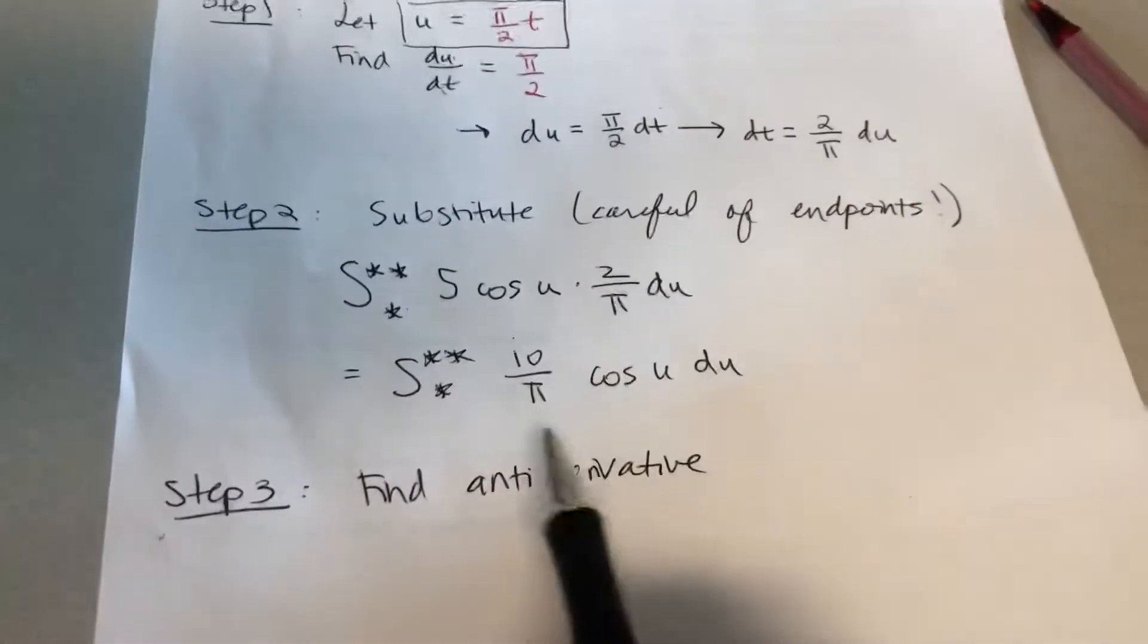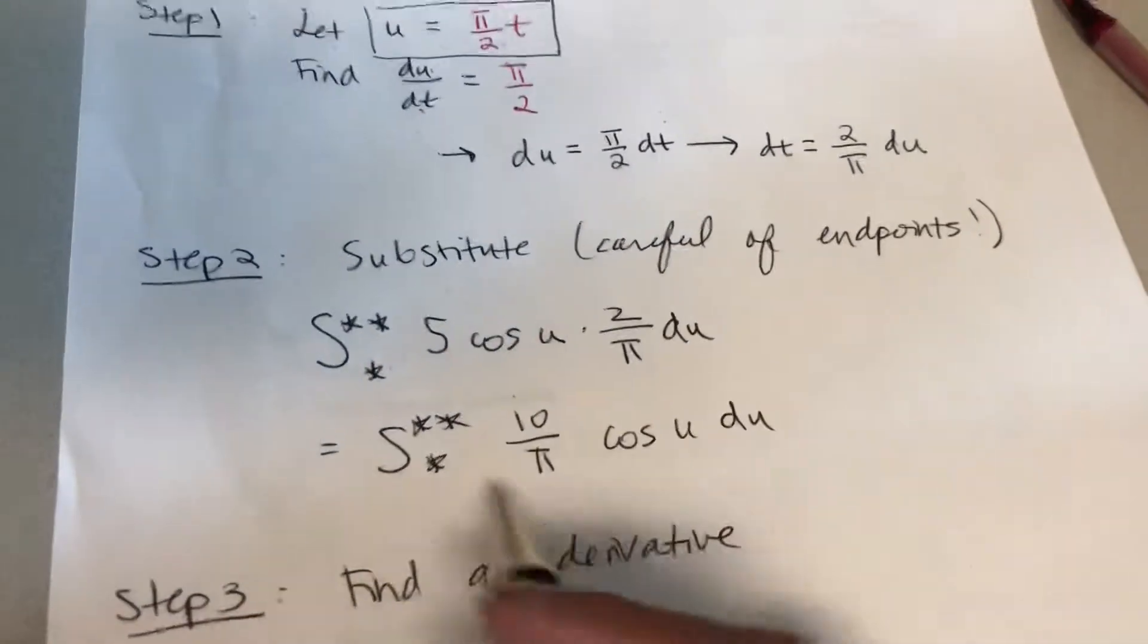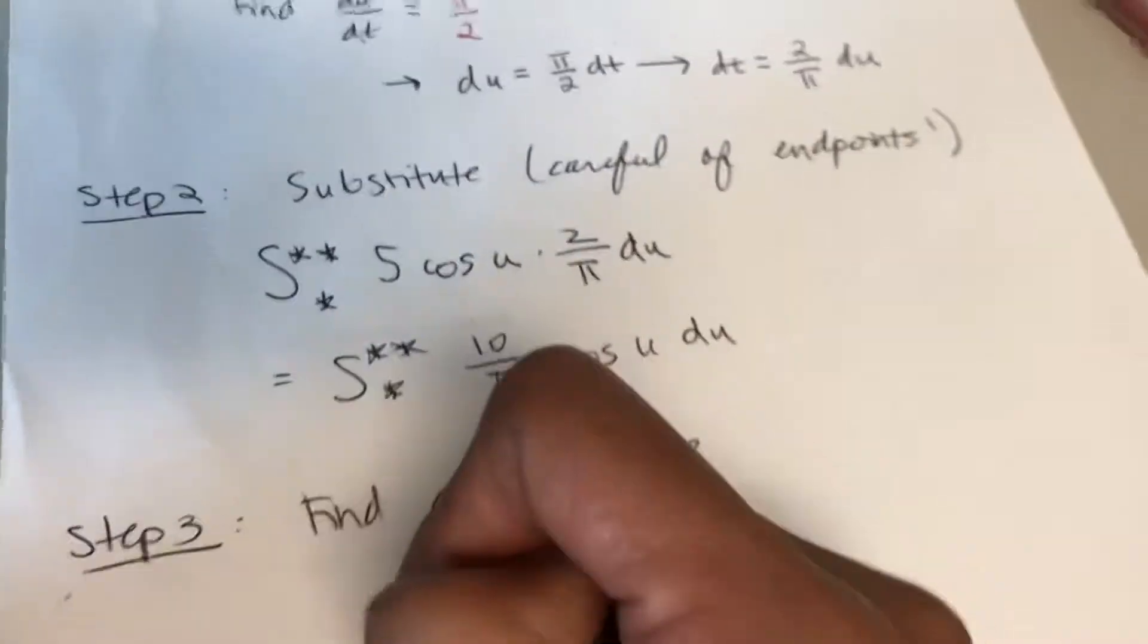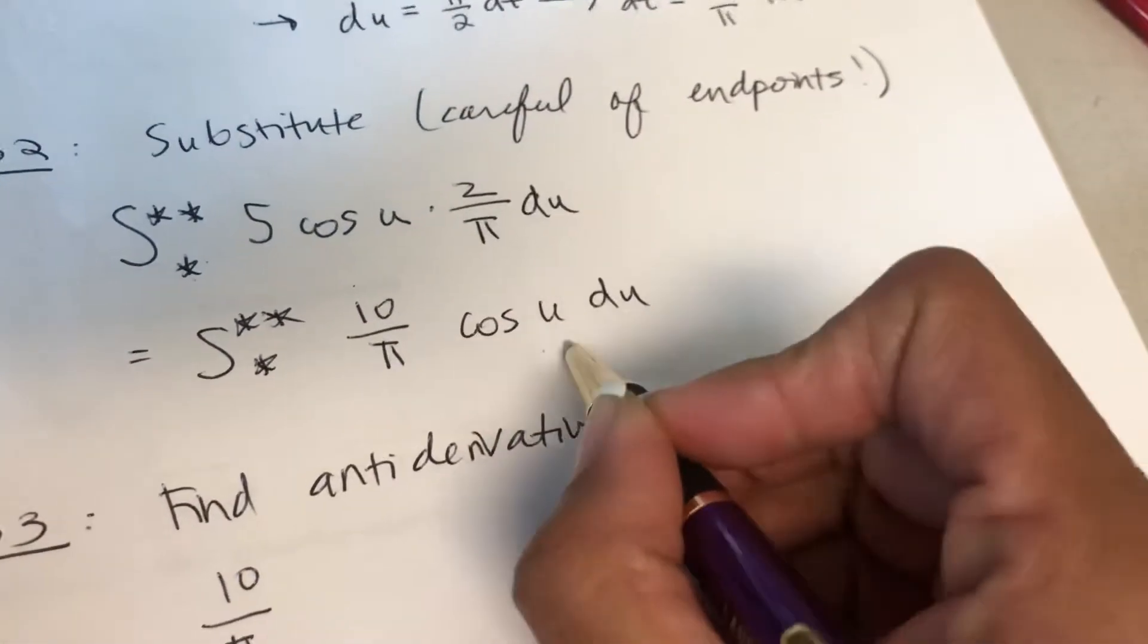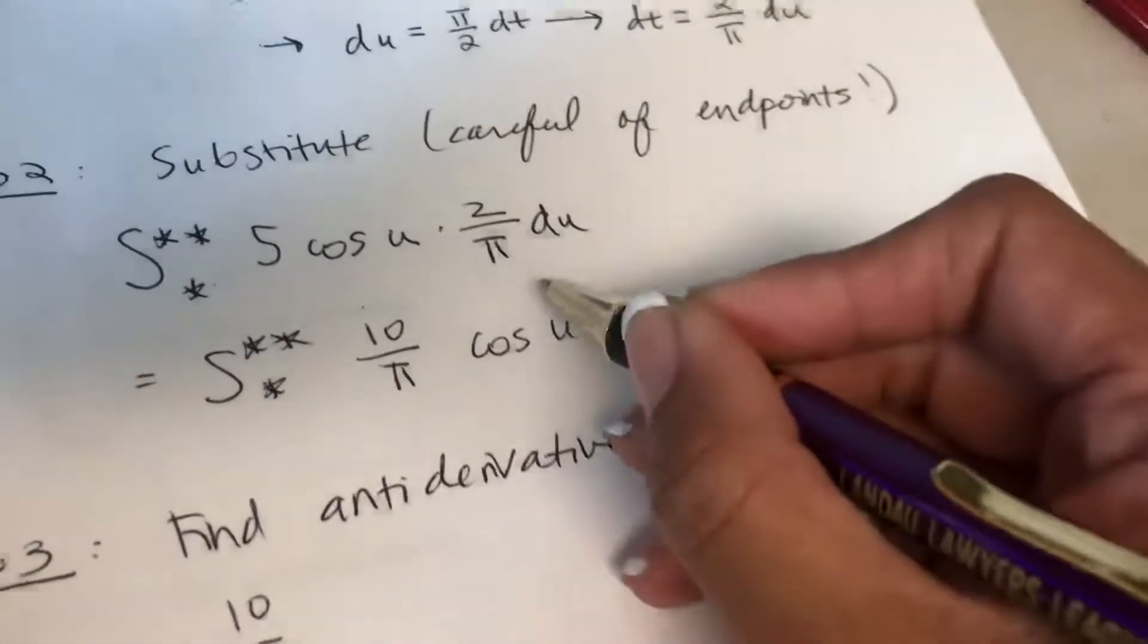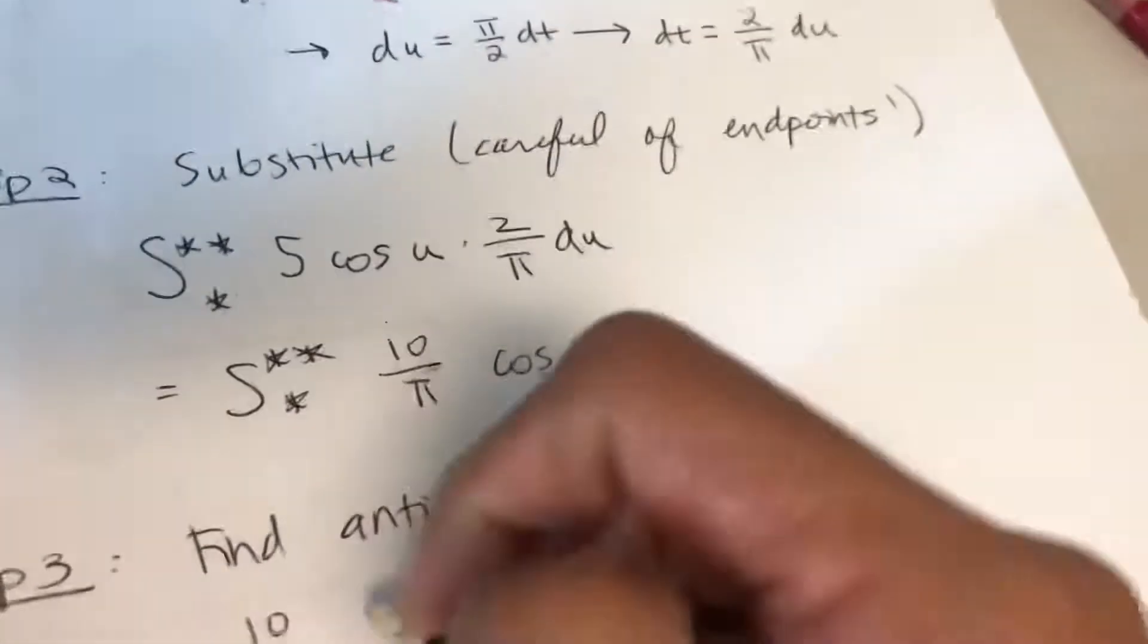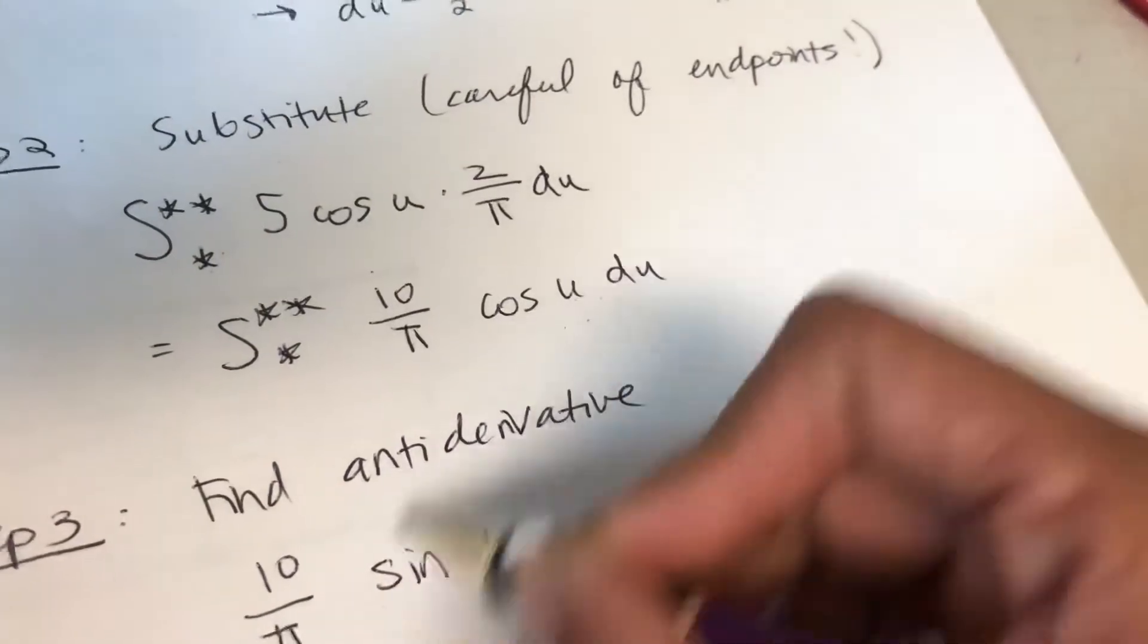The next step is now to find the antiderivative of the simpler looking integral. The antiderivative of this is going to be 10 over pi. What's the antiderivative of cosine u? You want to ask yourself the derivative of what will give me cosine u? That'll be sine u, because the derivative of sine u will give you cosine u. Be careful of the signs, just think about that.